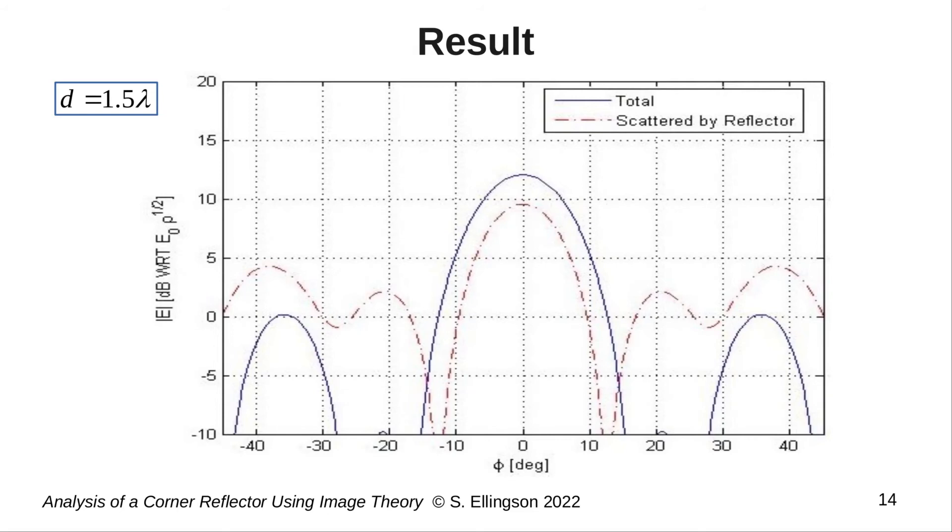Before plotting, I've divided the equation on the previous slide by e sub 0 divided by the square root of rho, which normalizes the result relative to the magnitude of the contribution of the feed alone. This is indicated in the label on the vertical scale of the plot. This particular normalization is convenient because it will make it possible to determine directivity in a very simple way, as we will see in a moment. Also, note that the angle span is limited to plus or minus 45 degrees. Outside the span, the image theory model is obviously not valid. I could have, of course, also used the limits plus or minus 180 degrees and simply zeroed the curve outside plus or minus 45 degrees.